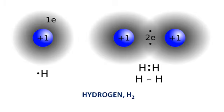Take hydrogen for example. Each hydrogen atom has one electron in its outer shell, but it needs two to be stable. By sharing their electrons, two hydrogen atoms can bond together, forming a molecule of hydrogen.